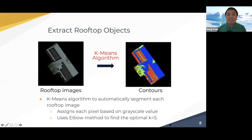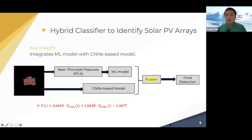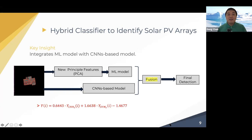And then on the satellite image, we want to apply a k-means algorithm to automatically segment each rooftop image into contours. And then we want to focus on only solar panel residential contours. We then design a hybrid classifier to identify solar PV arrays. The insight is we want to combine all the benefits from the machine learning and deep learning parts. So we identify new principal features to build a new machine learning model, and then we design a new CNN-based model. To ensure we can receive all the benefits, we learn a fusion function to make the final detection result decisions.